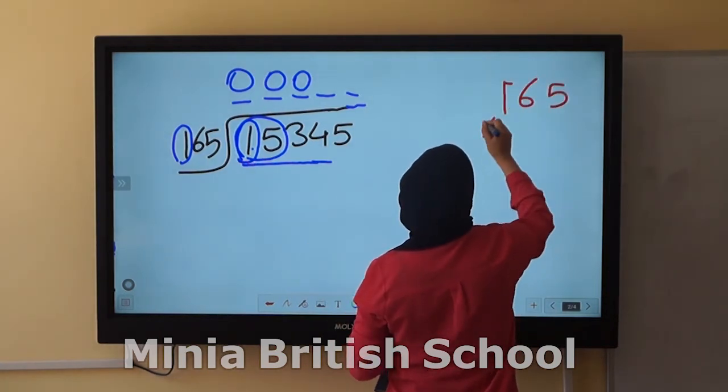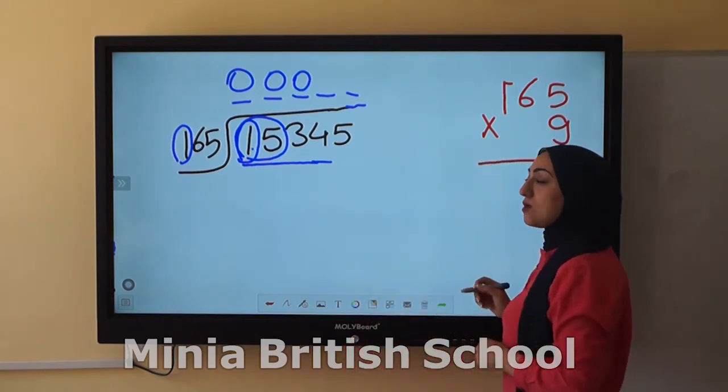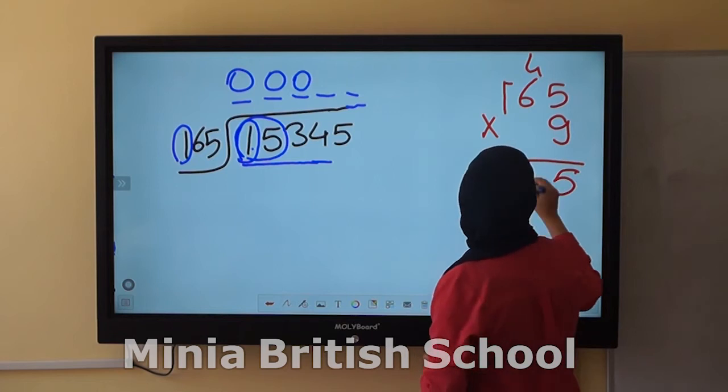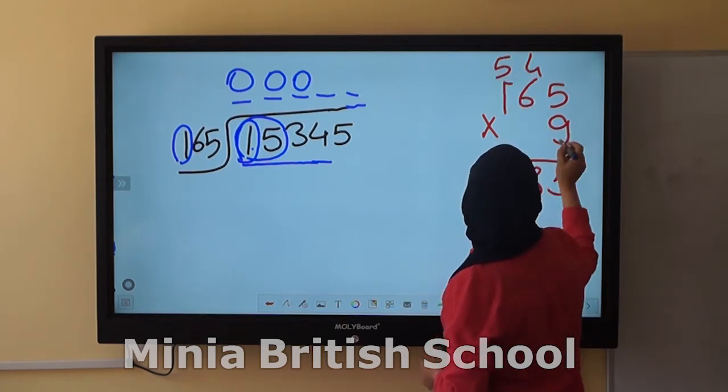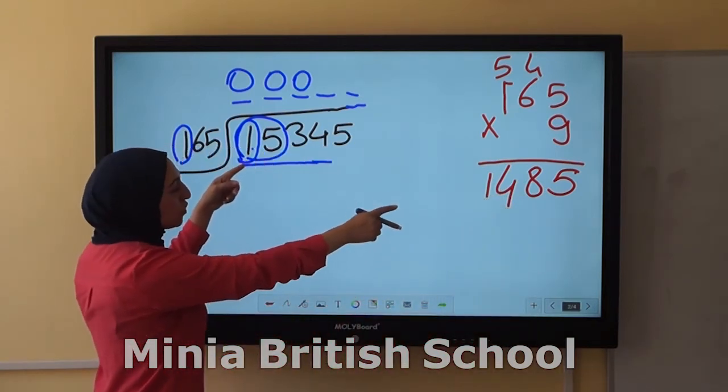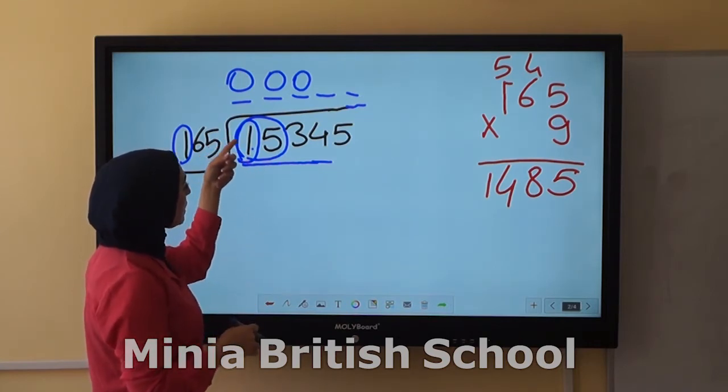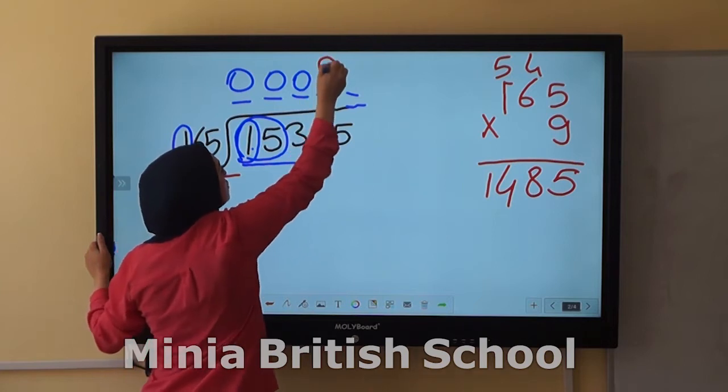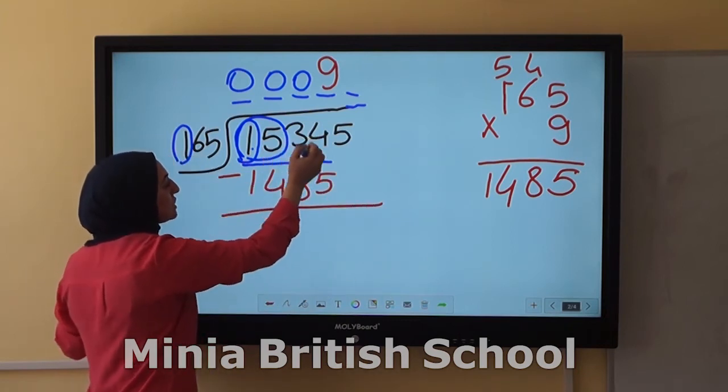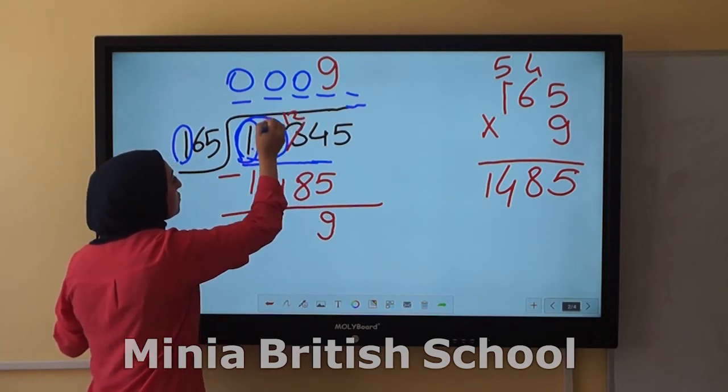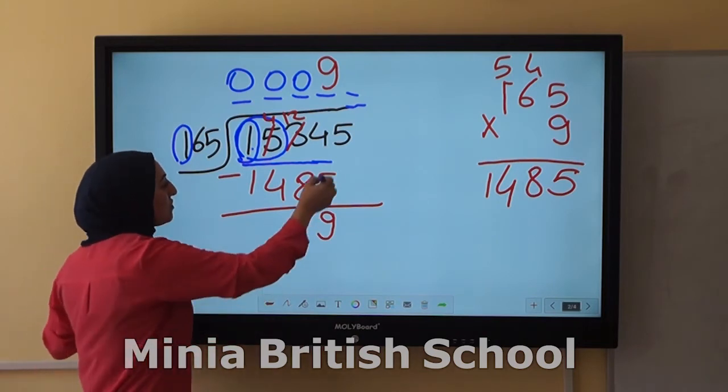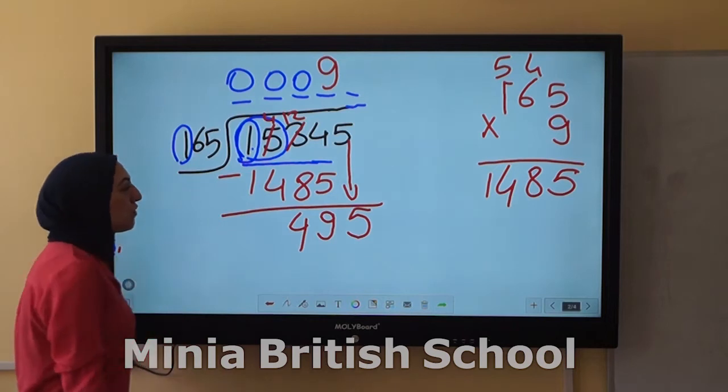165 times 9: 5 times 9 is 45, 6 times 9 is 54 plus 4 is 58, 9 times 9 plus 5 is 14. So 1485 is closer to 1534. So I write here 9. And here minus 45. Then subtract. 4 minus 5 is 9, and this is 2, 12 minus 8 is 4. Then 0, 0. So the remainder here is 49. Then drop the next digit, which is 5.